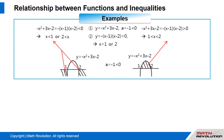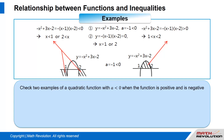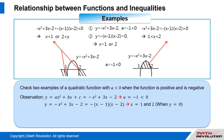Another example: let us check two examples of a quadratic function with a is smaller than 0, when the function is positive and when the function is negative. First, let us make observations on the function. y equals a times x squared plus b times x plus c equals negative x squared plus 3x minus 2, which means a equals negative 1, which is smaller than 0.